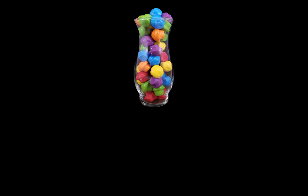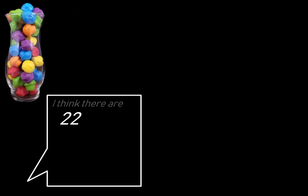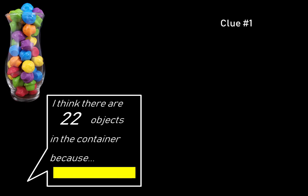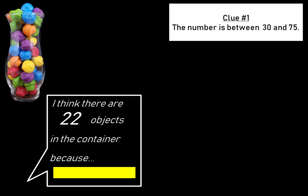Now let's zoom in on a single student to examine their experience as the clues begin to appear. The student has written 22. They've shared their estimate, and most importantly, they've shared their reasoning. Then the first clue appears. The number is between 30 and 75.